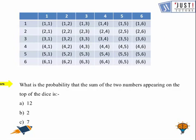So let us try this one. What is the probability that the sum of the two numbers appearing on the top of the dice is 12? So 12, I can see only this outcome will give me 12. 6 and 6 is 12. So here it's only one event and total outcomes are 36. So the probability here is 1 over 36.